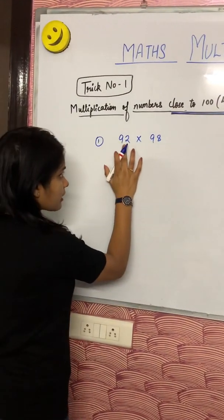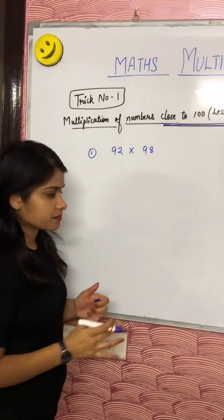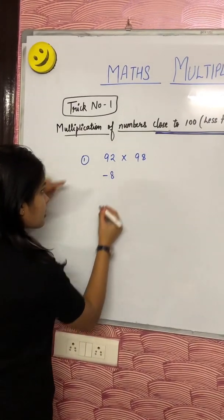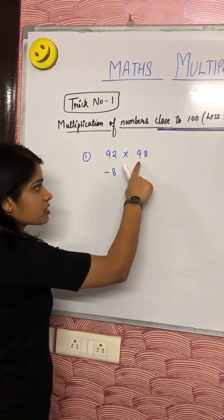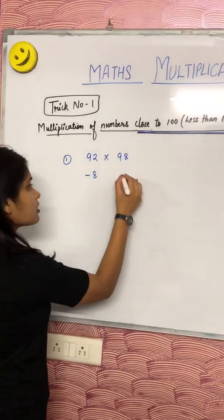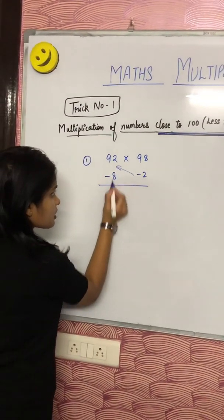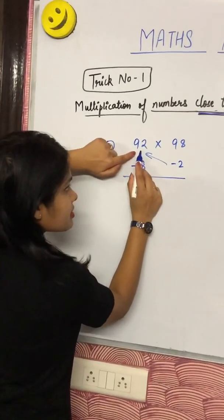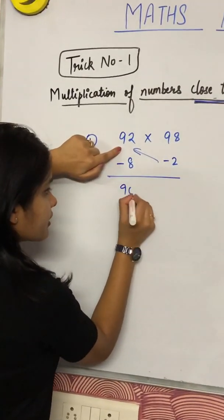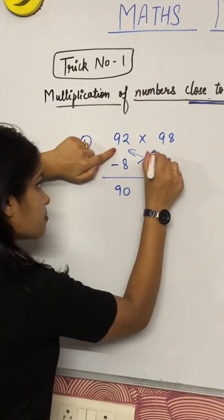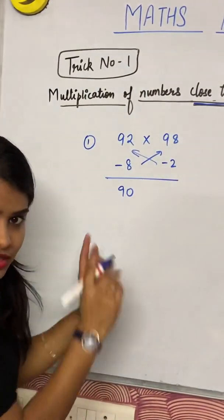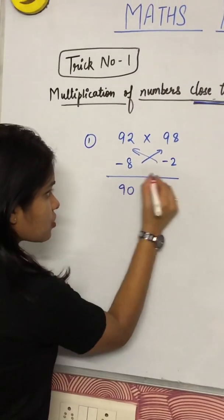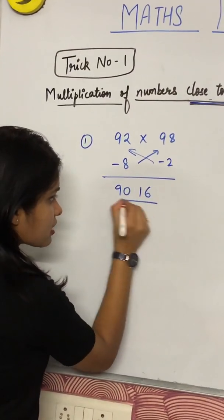See, 92 to 100, kitna kam hai? We can say minus 8, means you have to do 92 minus 100. Same with this: 98 minus 100 equals minus 2. Now, just do 92 minus 2, you will get 90. Either you can subtract minus 8 from 98; both ways are correct. And 8 into 2, you have to multiply these two: 8 into 2 is 16.